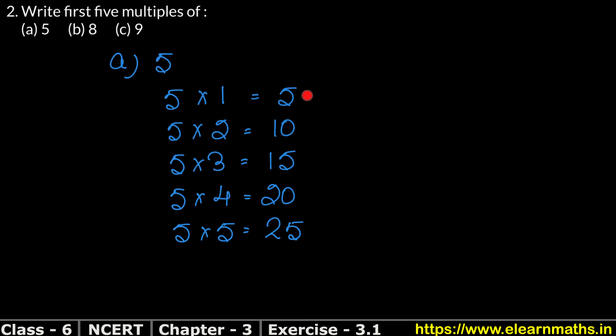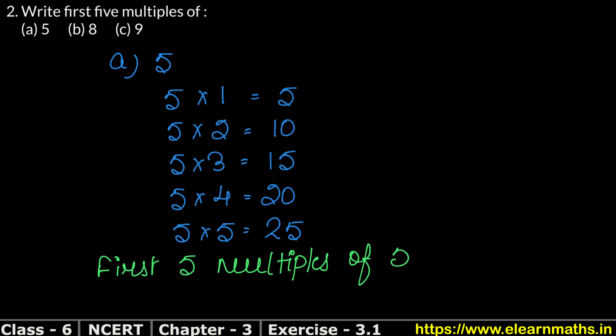So the first 5 multiples of 5 are: 5, 10, 15, 20, and 25. This is the answer.